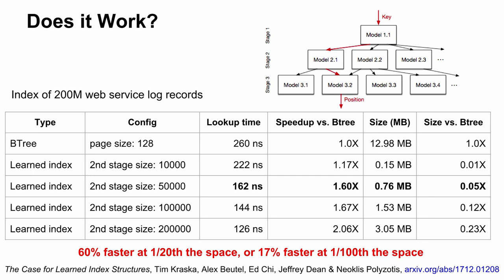If you take a B-tree indexing 200 million web service log records and find the fastest B-tree page size for lookup time, that's roughly a 13 megabyte data structure. With a learned index—small neural nets learning a pathway through different parts of the key space—running on a CPU, you can get something 60% faster than the B-tree at one-twentieth the space, or 17% faster at one-hundredth the space. We think with hardware acceleration for these neural net operations we could do even better, and we're pretty excited about that.